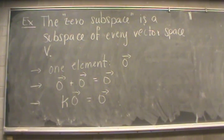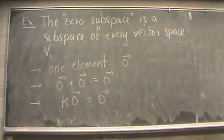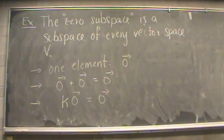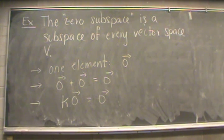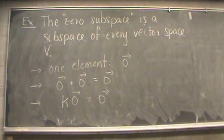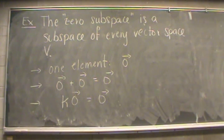This leads us to our first example: the zero subspace. The zero subspace is a subspace of every single vector space V — it only contains one element, the zero vector. We can do addition and scalar multiplication; everything stays inside that subspace. So this subspace is closed under addition, closed under scalar multiplication, and in fact satisfies all ten axioms.